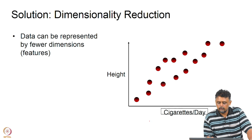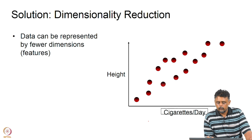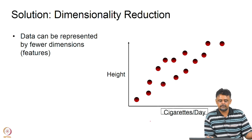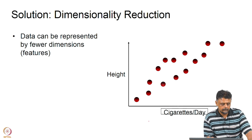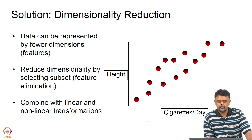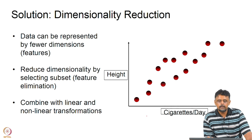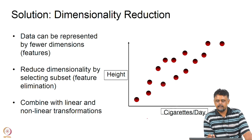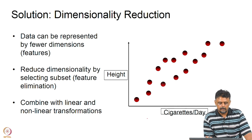The solution to this problem is dimensionality reduction, wherein we reduce the number of features that represent the data. The idea is to reduce the dimension by selecting subsets through feature elimination, and the algorithm that does that is what we refer to as principal component analysis.